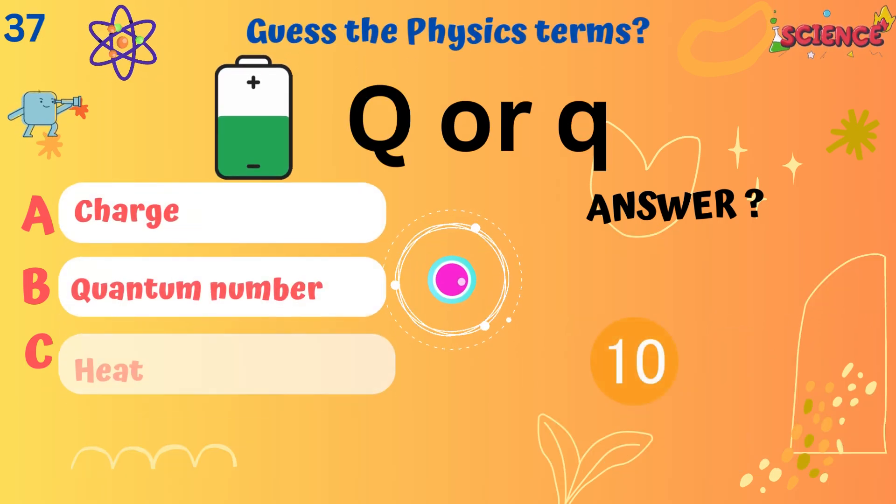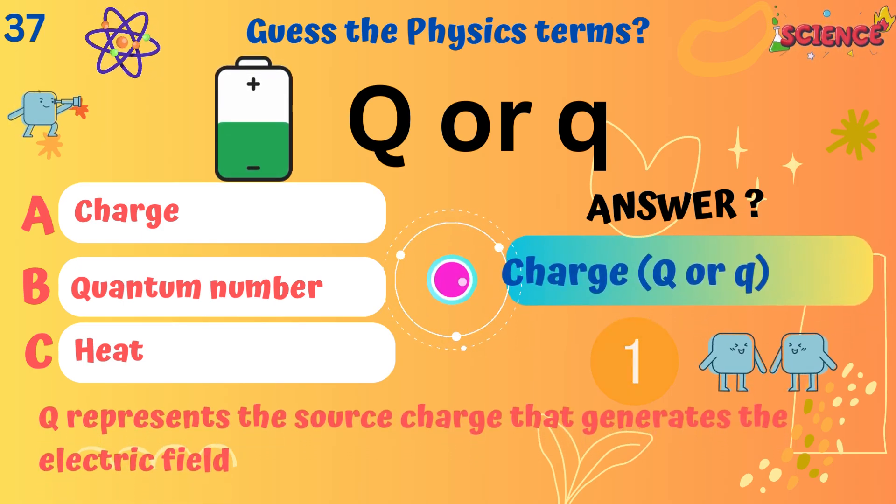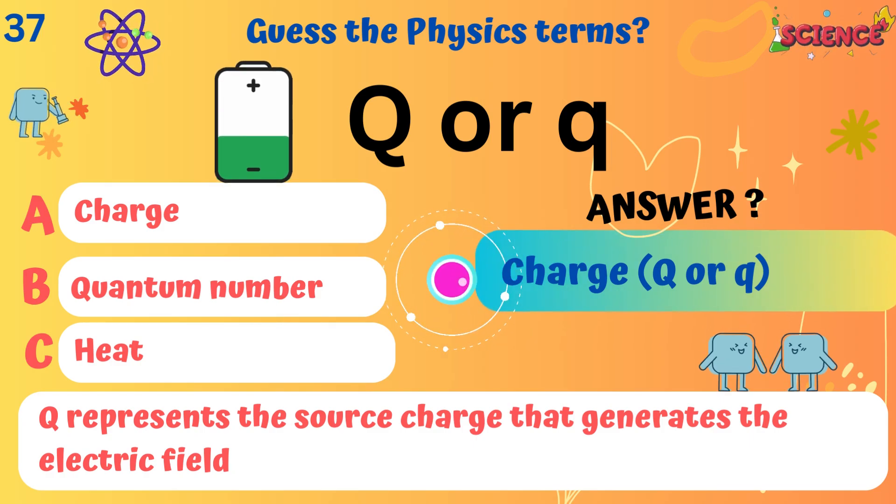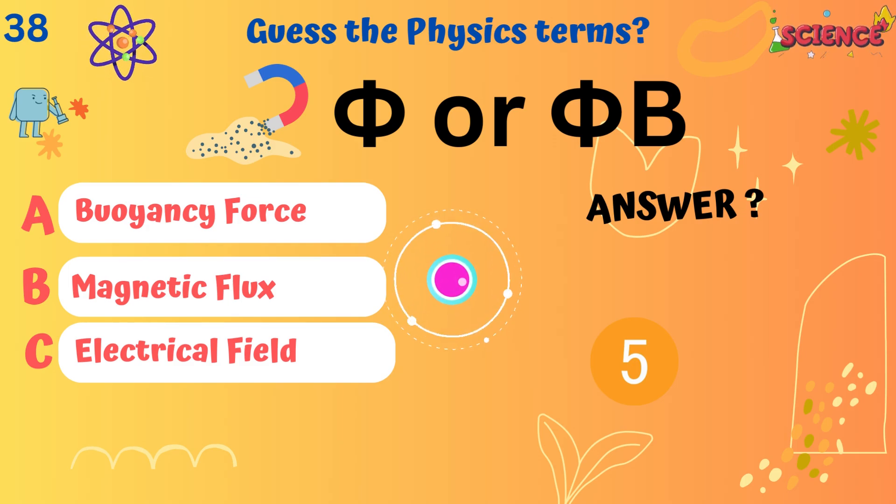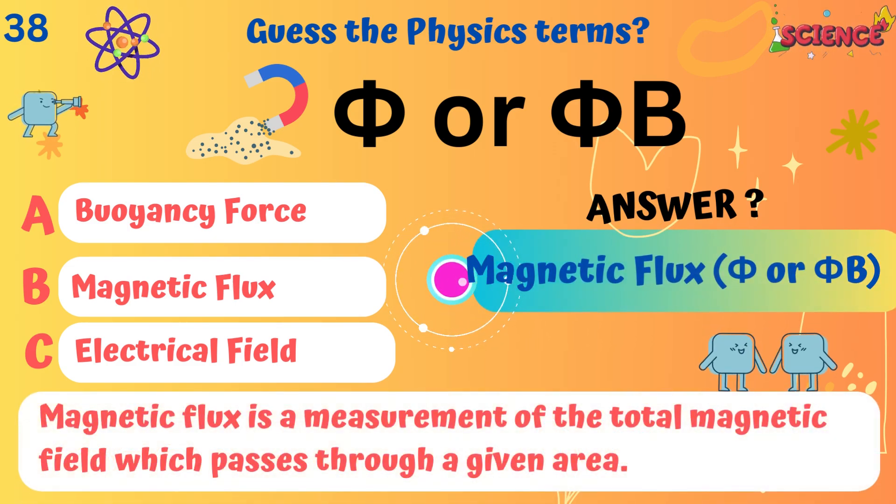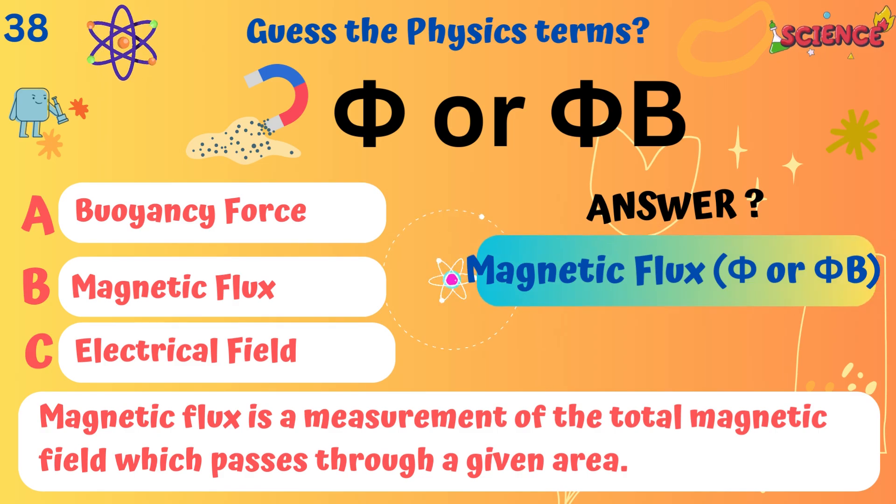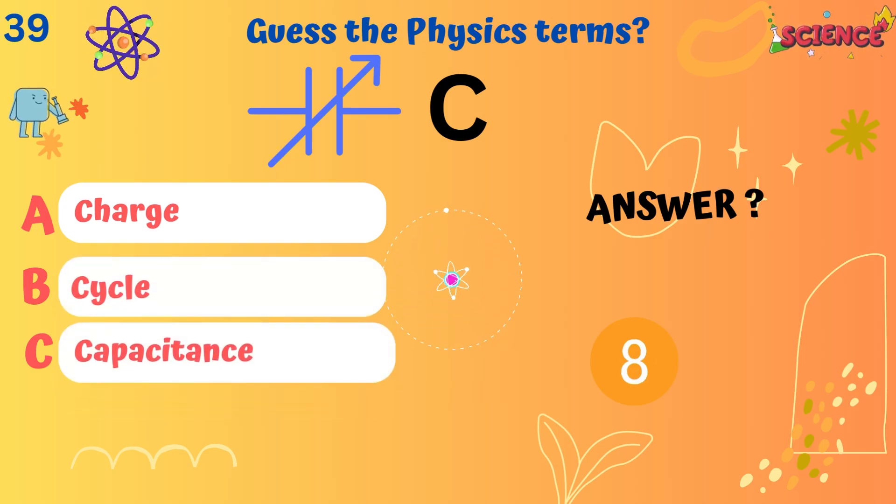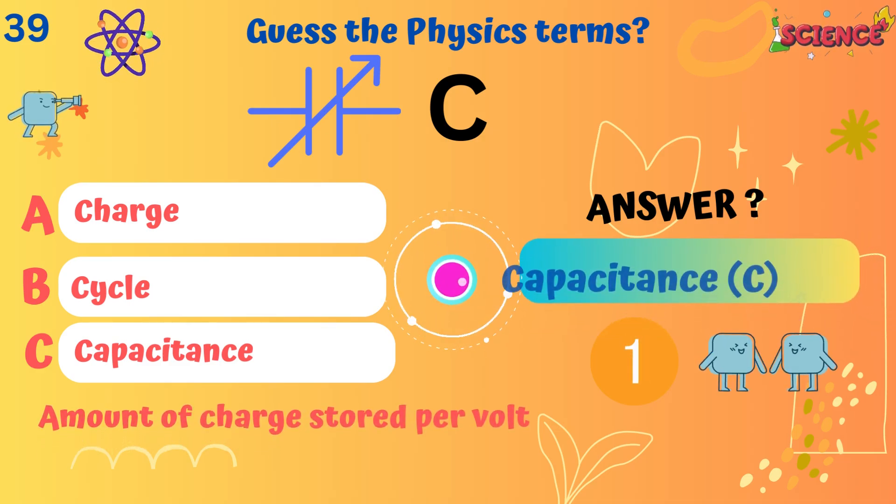Magnetic flux is a measurement of the total magnetic field which passes through a given area. Capacitance. Amount of charge stored per volt.